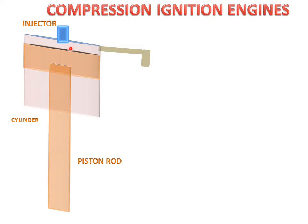The injector injects fuel in the form of a spray. Air is taken from the atmosphere through a pipe and reaches the cylinder. Fuel enters through the injector, and the piston compresses the air sufficiently to heat it, which burns the fuel by compression. This burning of fuel creates a force on the piston, moving it upward and downward.